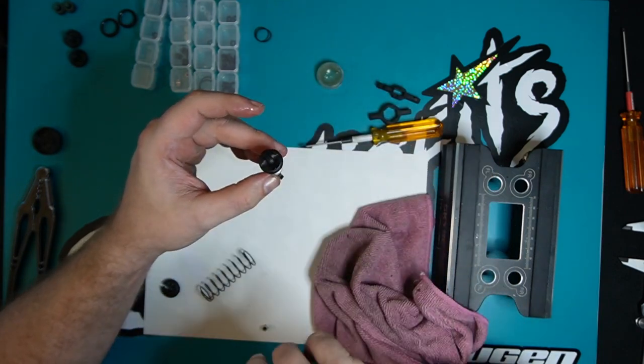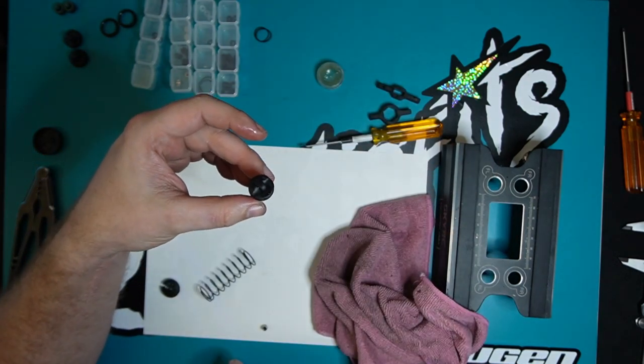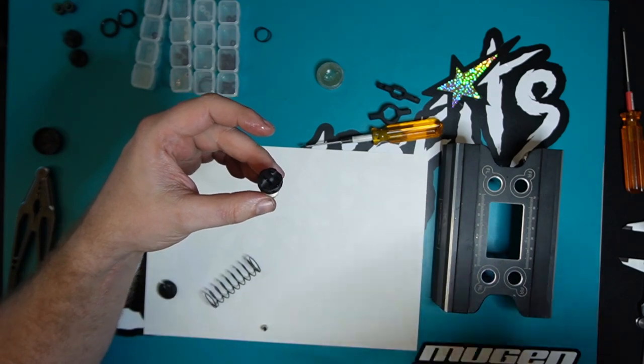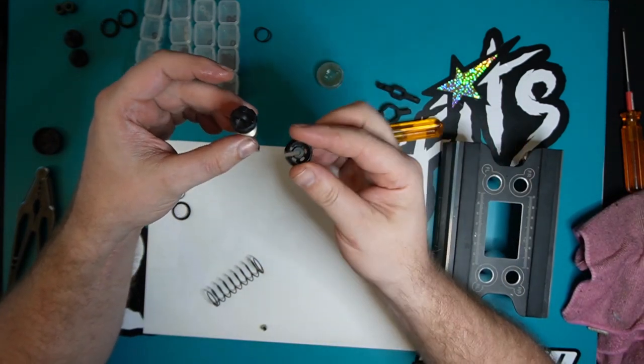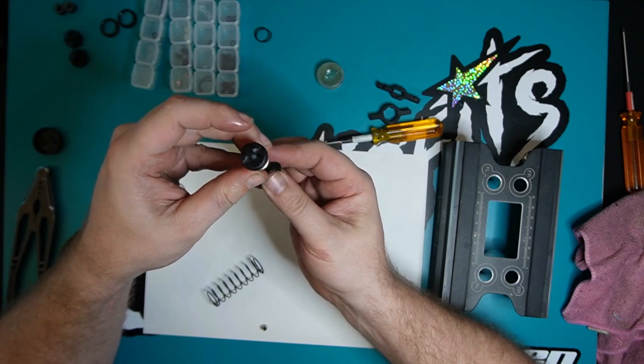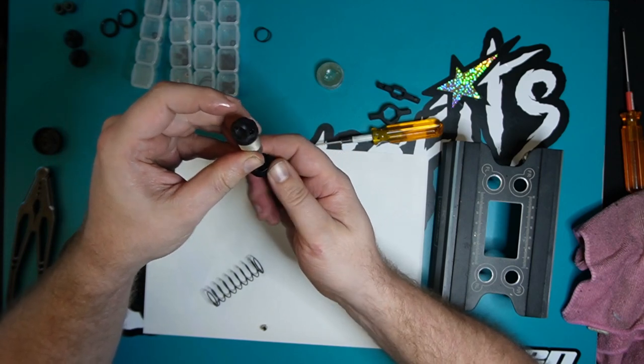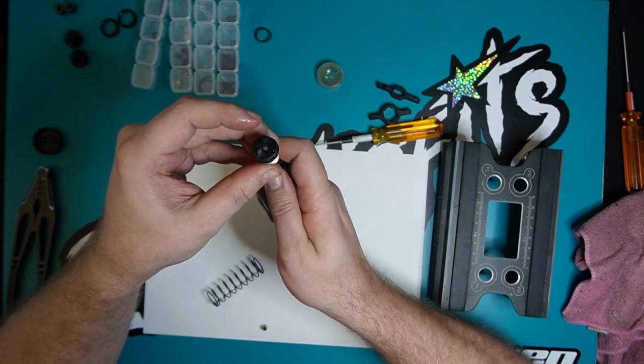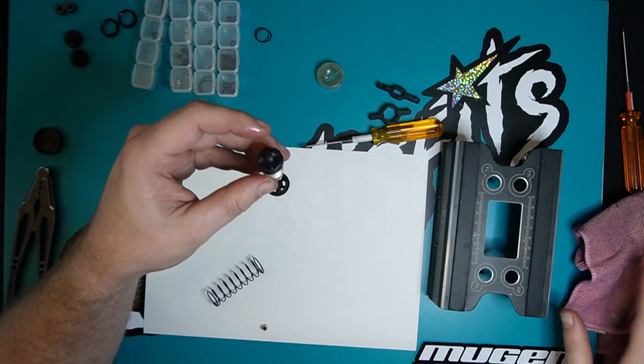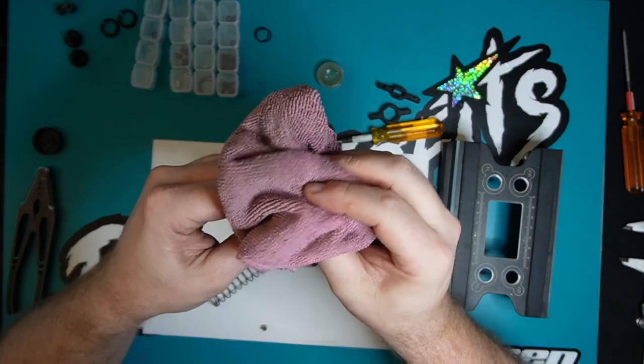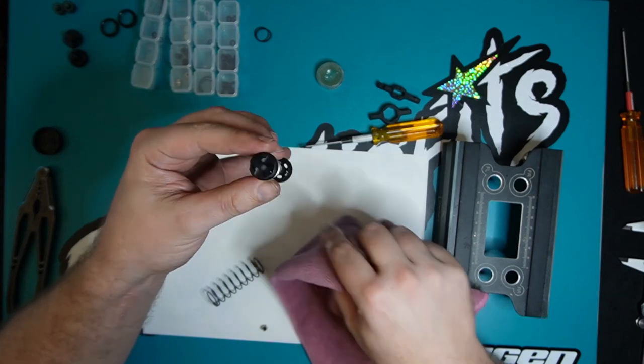And you definitely need a rag for this bit because you do get a little weepage of the oil. Now you want to bleed the shock, which is getting rid of the excess oil. Top tip which Matt H told me about really, is if you put the spring seat on at this point when you're bleeding it, you're actually bleeding it the right amount. You're not over-bleeding it or under-bleeding it or whatever. You can just go straight to the end of the travel.